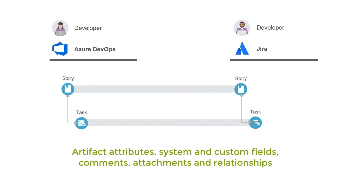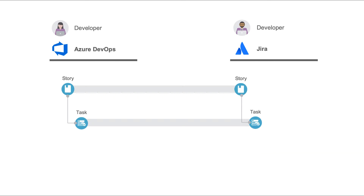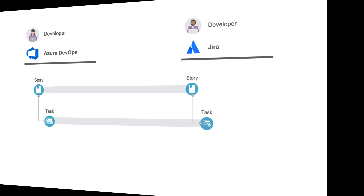During the demo, I'll show you how the artifacts, along with their attributes — system and custom fields, comments, attachments, and relationships — all flow from tool to tool seamlessly to help eliminate duplicate data entry, email exchanges, and status meetings. So let's get started.